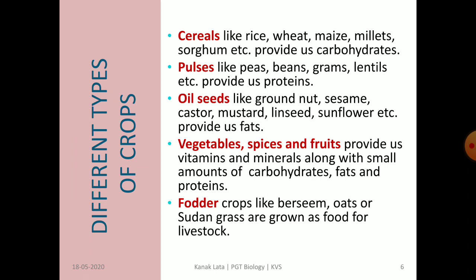The last topic of today's session is about different types of crops. Crops are of different types. We may categorize them into cereals like rice, wheat, maize, millet, sorghum, etc.; into pulses like peas, beans, grams, lentils, etc.; oil yielding crops like groundnut, sesame, castor, mustard, linseed, sunflower, etc.; and crops may also be vegetables, spices, and fruits.